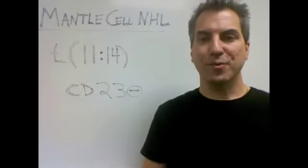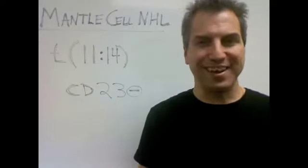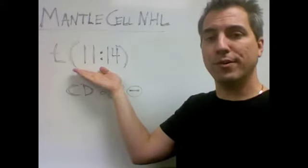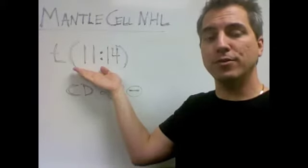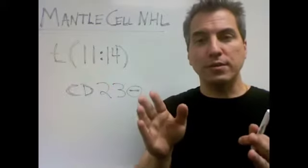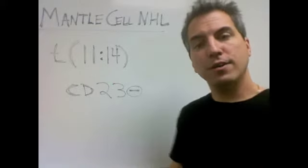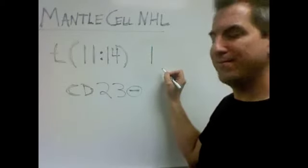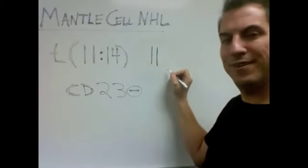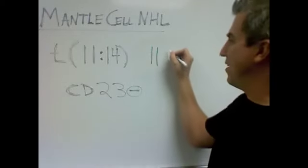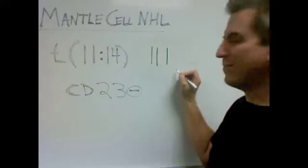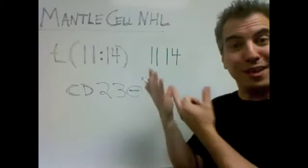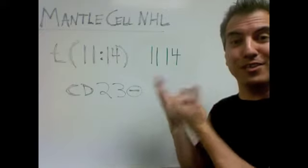So how are we going to remember this? We've got to make it silly. For the translocation, notice you've got four numbers: 11-14, four numbers. So all you need to do to remember it is count to four. Let's count to four together. Here we go: one, two, three, four. There's your translocation — just count to four.